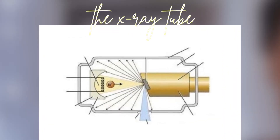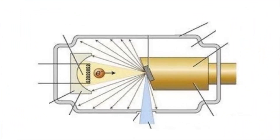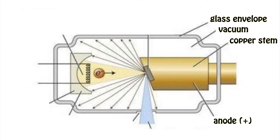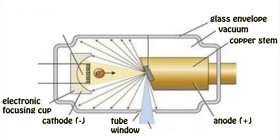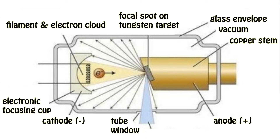Now let's take a look at the major components of the x-ray tube. We have the glass envelope that the tube is housed in, the vacuum, the copper stem, the anode, the tube window, the cathode, the electronic focusing cup, the filament and its electron cloud, the focal spot on a tungsten target, and when the x-ray is produced it escapes through the tube window and we get the useful x-ray beam.